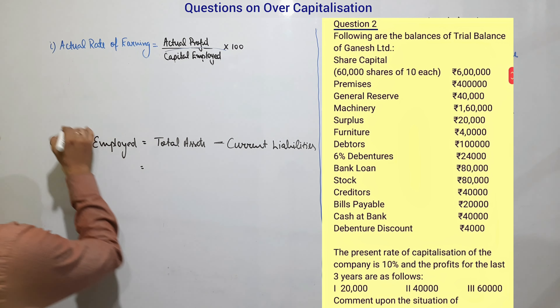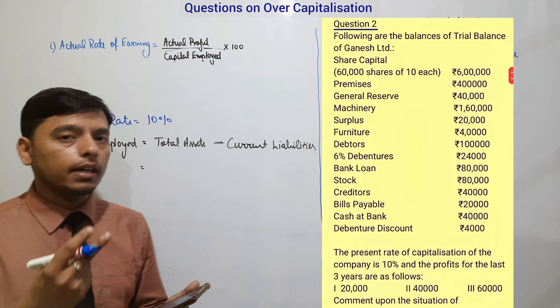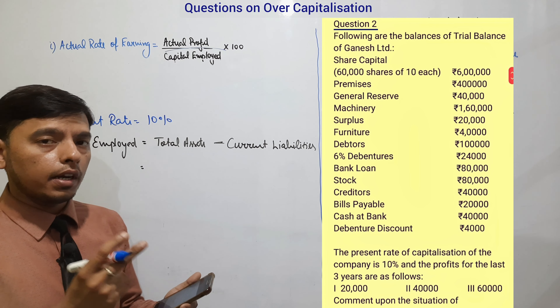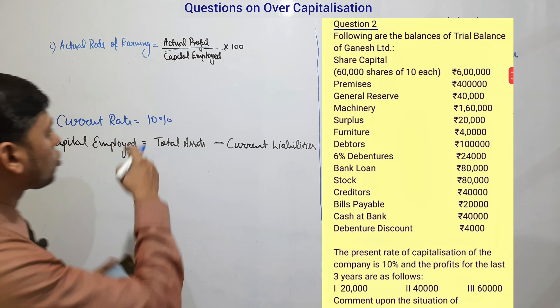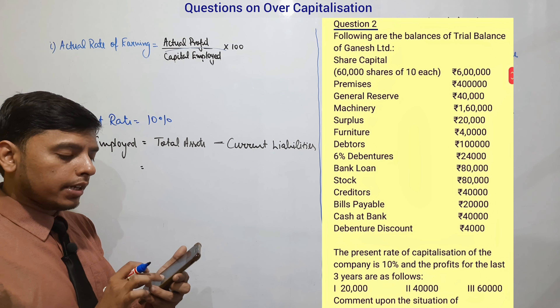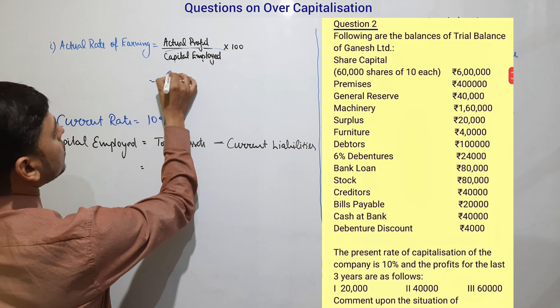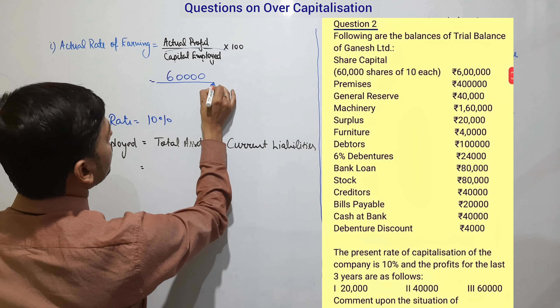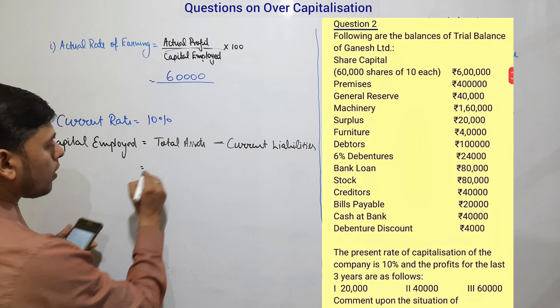For the first condition, we need to find the actual rate of earning and compare it with the current rate of ten percent. The actual rate of earning equals actual profit divided by capital employed, multiplied by 100. Three years of profit are given: twenty thousand, forty thousand, and sixty thousand. Since we use the current year's profit, actual profit is sixty thousand.